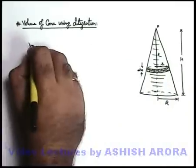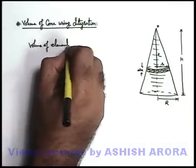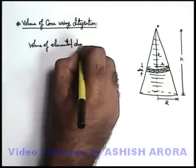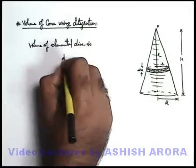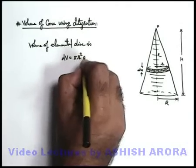So here we can say the volume of elemental disc is dV, and it can be simply written as πr²dx.